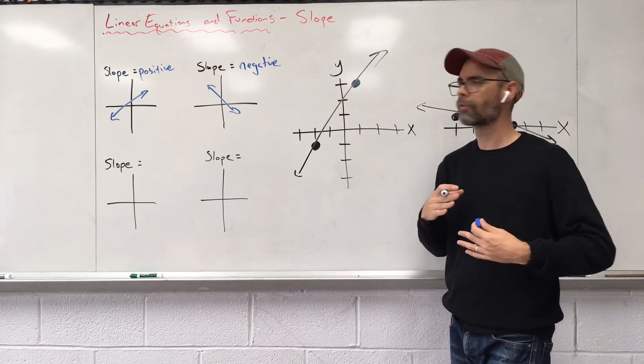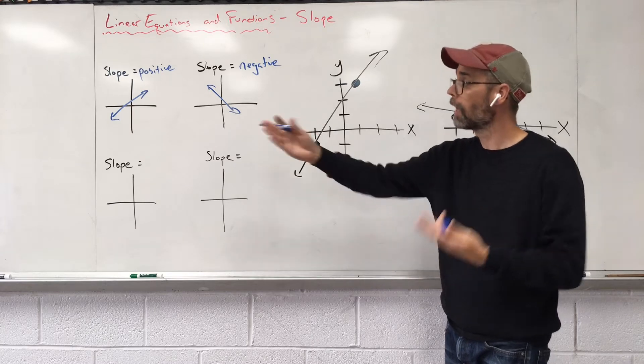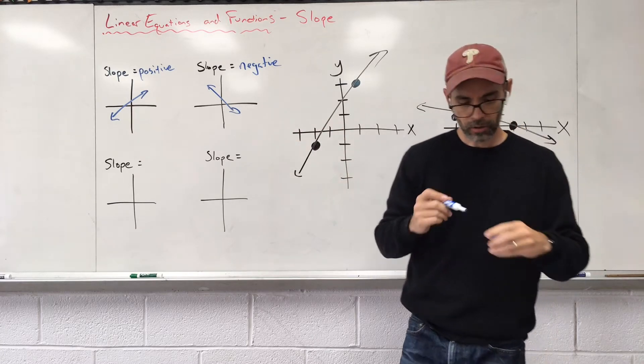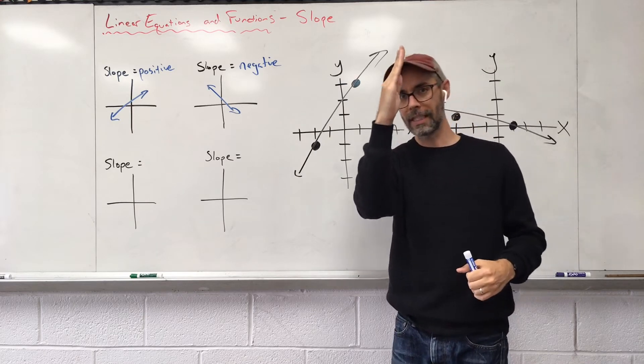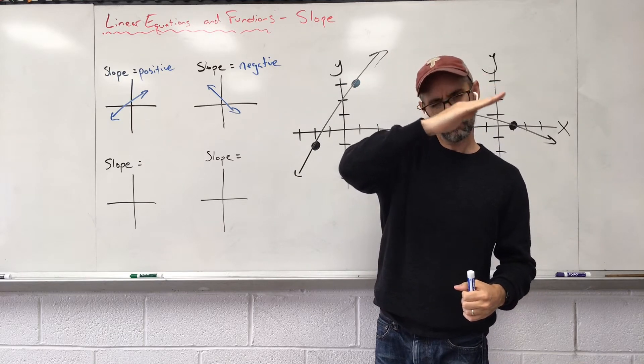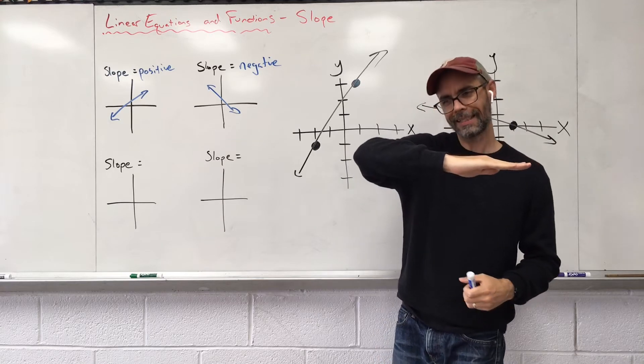We're just talking about the different types of slope that you can come up with, positive, negative. Sometimes these lines or these hills could get really steep, and sometimes they could get really flat, very not steep at all.